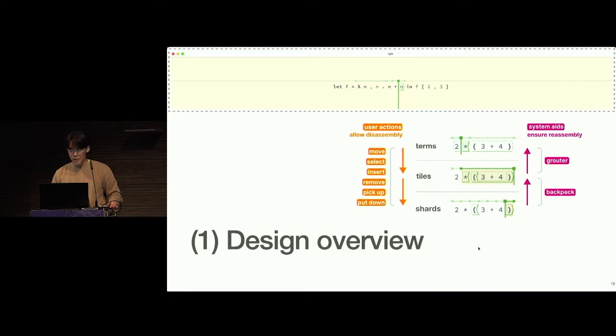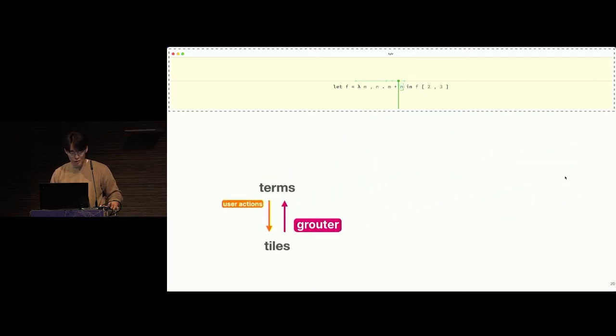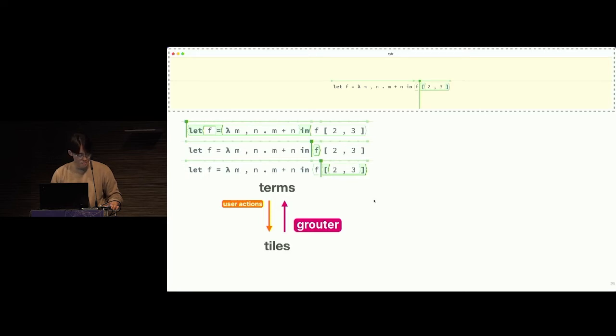As suggested by our overview figure, we can neatly divide the design of Tyler into two independent subsystems, the grouter and the backpack, that operate at distinct points between the structural levels. We'll start with the terms tiles and the grouter, which lets us go back up. As I pan my cursor over this edit state, you'll notice that at every point touching my caret is this sort of hexagonal shape. These are just the regular terms that we're used to. If I move over here, we see that this application is nested within this let. And if we move over to this f, it was nested within this application. We can see that nested structure over here.